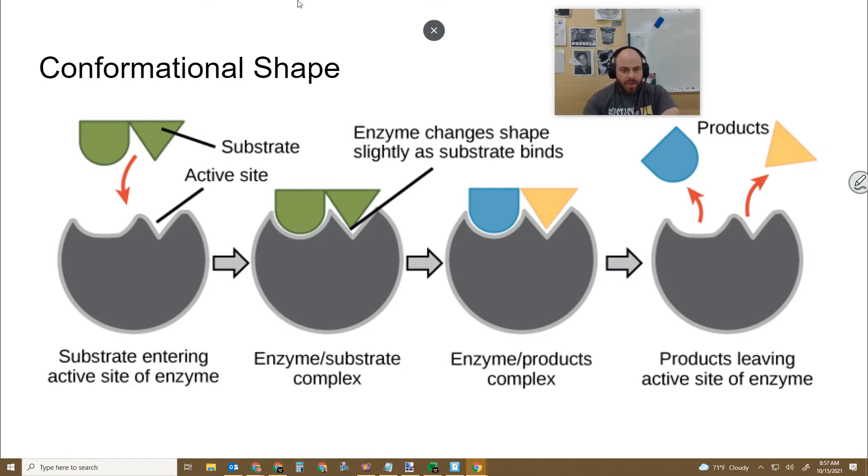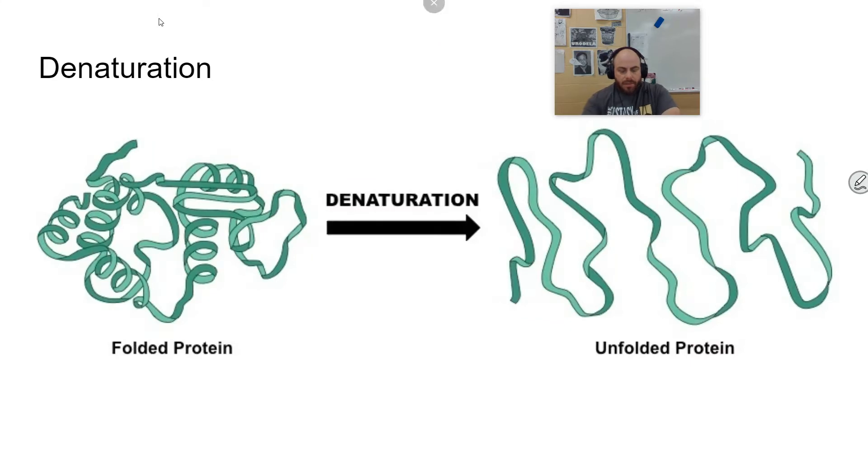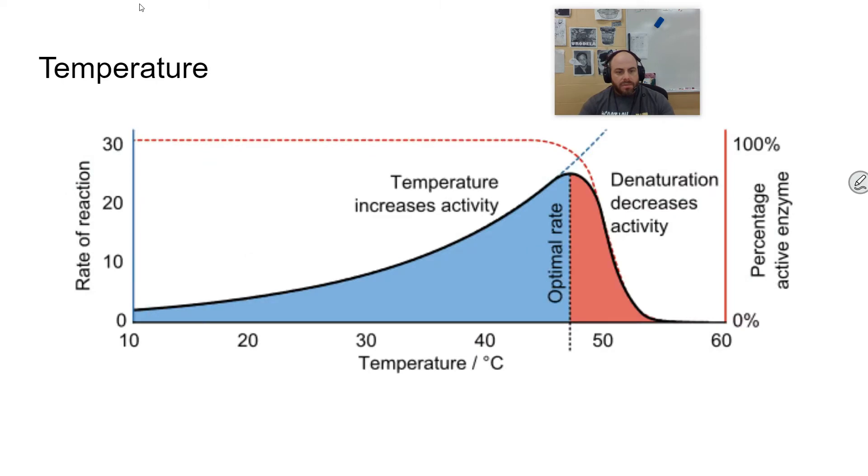Changes in this conformational shape are called denaturation. Denaturation is essentially the protein that has a shape and a particular function comes apart. There are a couple of things that can cause denaturation directly. One of them is temperature and the other one is pH. Denaturation is usually irreversible, meaning that the shape can't be fixed. A great example of this is like when you cook eggs, the albumin protein in eggs is irreversibly changed. You can't uncook an egg. There are instances in which an enzyme's shape can be changed and function can be returned. We're actually going to mention one of those in this lecture.